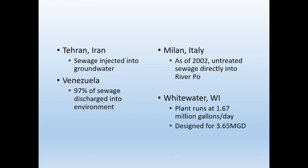Venezuela has been having a lot of big problems lately — about 97% of their sewage is just discharged. There's a pipe you can follow straight from people's houses to the rivers. And even in places where we'd expect sewage treatment, Milan, Italy didn't have a sewage treatment plant until 2002. There are lots of places in the world with essentially zero treatment.